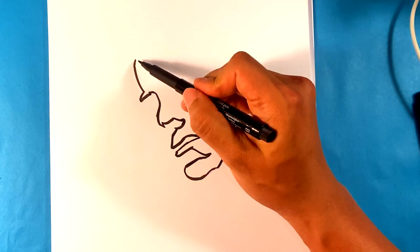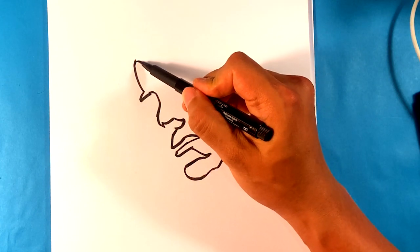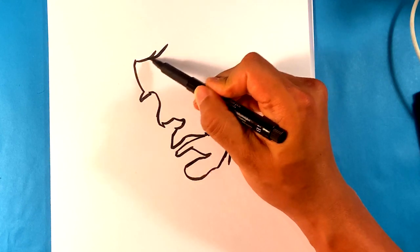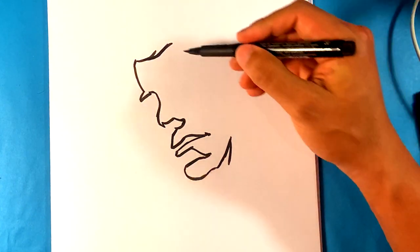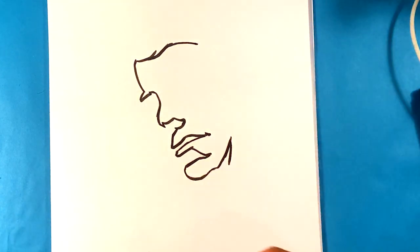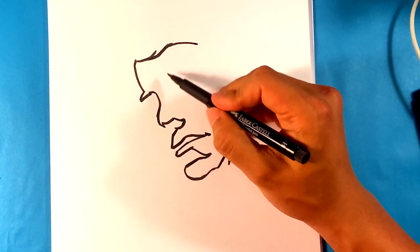Let's go back to the top of the forehead here. We're going to find the hairline. Pulling across. Before we continue that, we're going to find the eye.